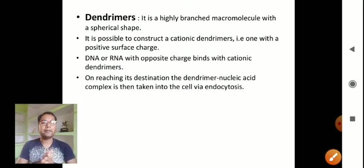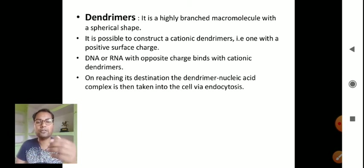Dendrimers are highly branched macromolecules with a spherical shape. It is possible to construct a cationic dendrimer, for example one with a positive surface charge. DNA or RNA with opposite charge binds with cationic dendrimers. On reaching its destination, the dendrimer-nucleic acid complex is then taken into the cell via endocytosis process.